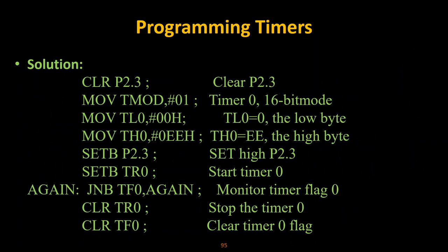In this program, we are not creating a square wave — we are toggling the pin for a specific duration. For five milliseconds, pin P2.3 should be ON. Initially, P2.3 is cleared to zero. TMOD is set to 01 for Timer 0 in 16-bit mode. TL0 is loaded with 00 and TH0 is loaded with E0. Then we set P2.3 from 0 to 1, enabling the pin.